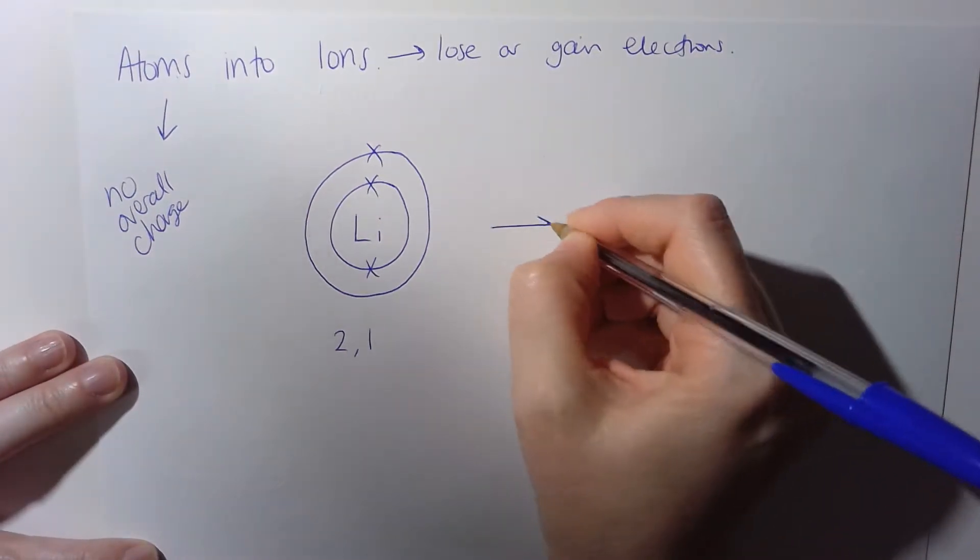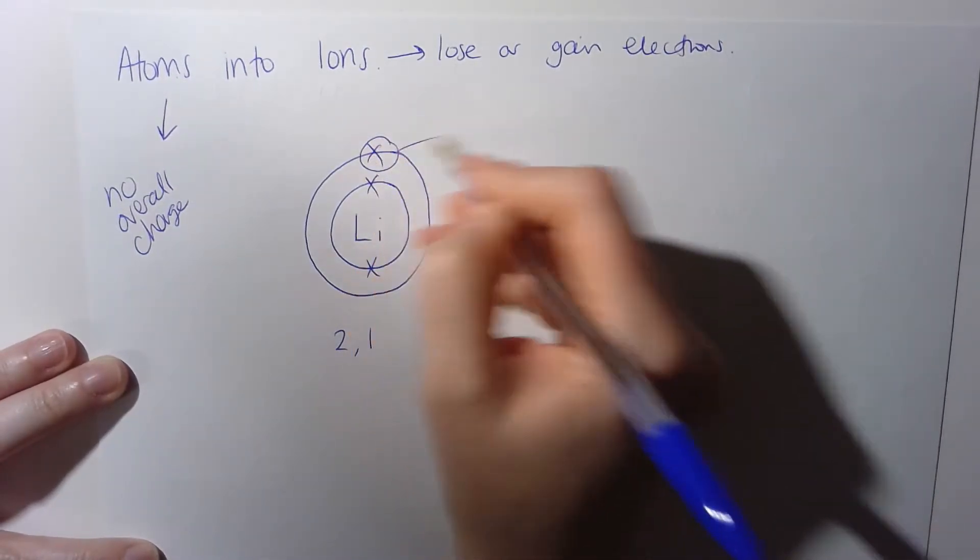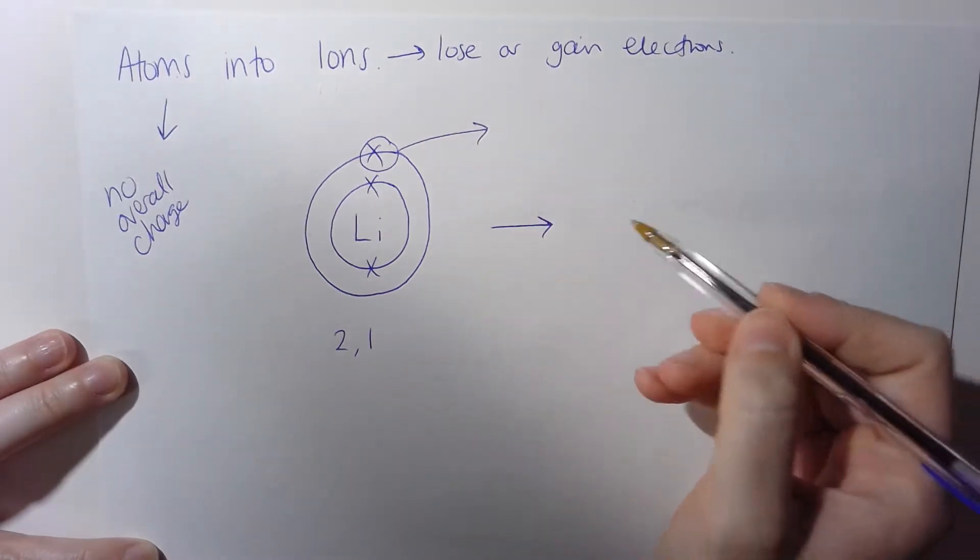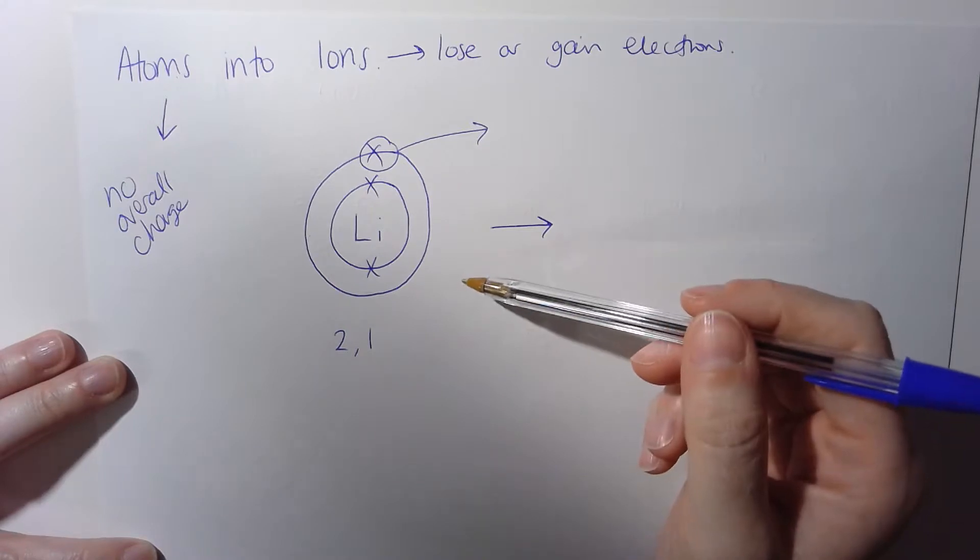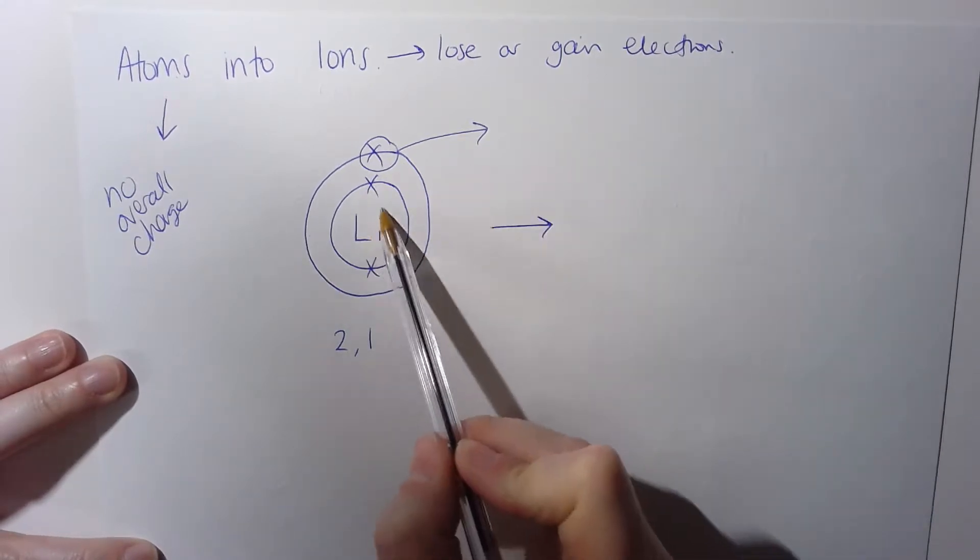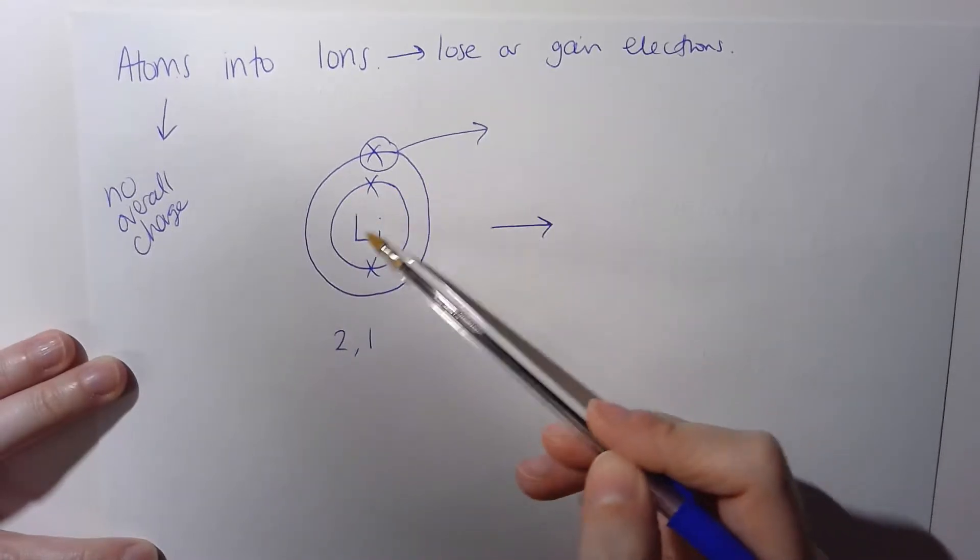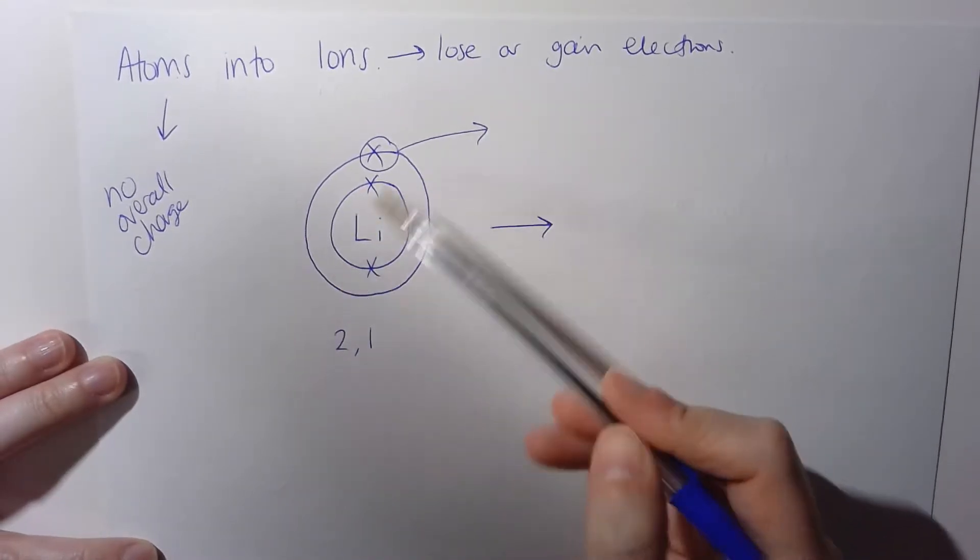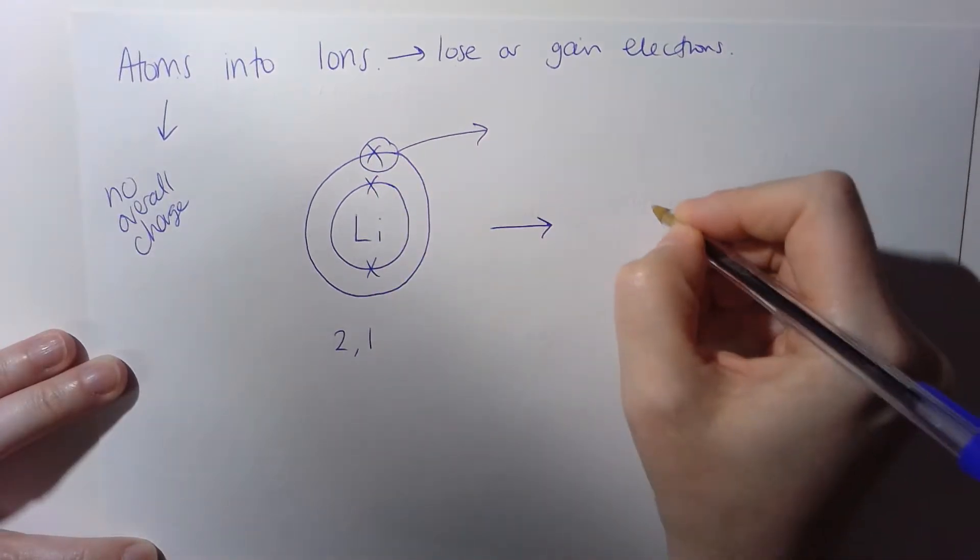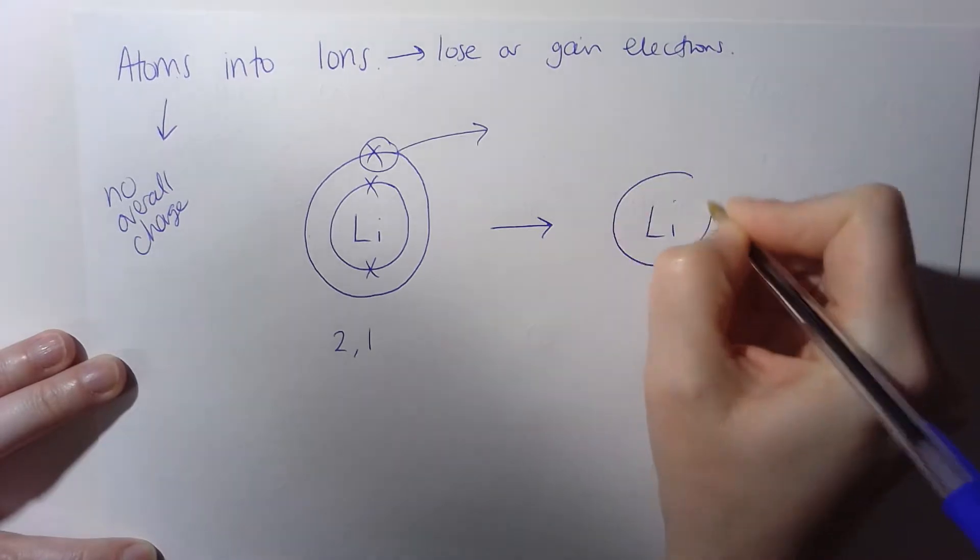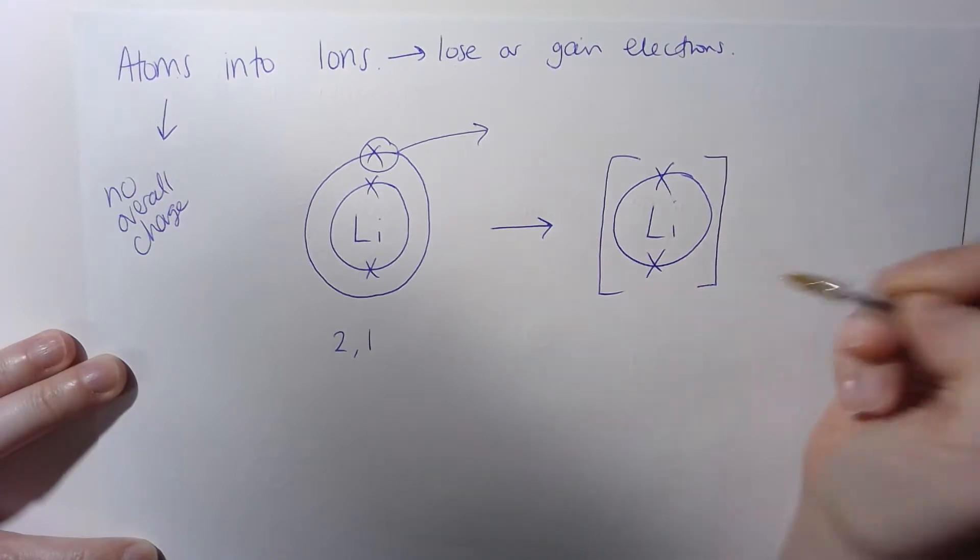To change this into an ion, it's much easier for this lithium atom to lose this electron than it is to try and fill that shell to its maximum. So it's kind of pulling in another seven electrons. The electrostatic attraction from this lithium atom isn't strong enough to pull those seven electrons in, but actually this one could be moving to somewhere else. So to draw this as an ion, we have one full shell, and to show that it's an ion we must add these square brackets.